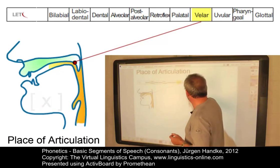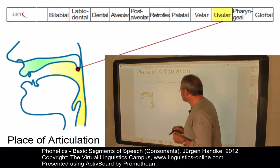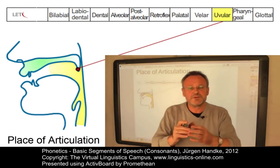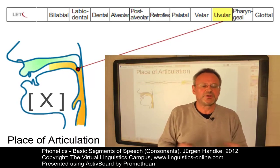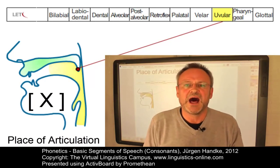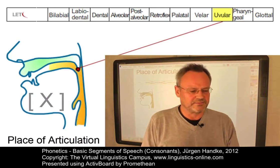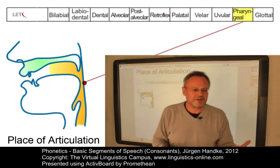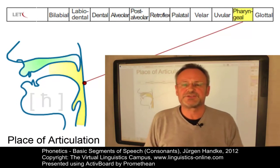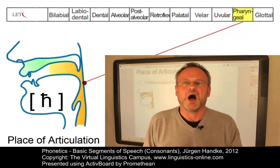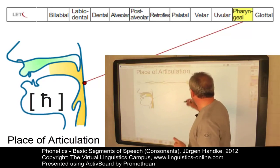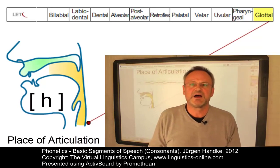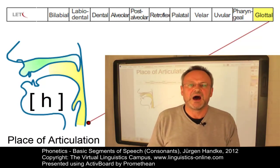Moving further back, the uvular place of articulation uses the tongue and the uvula creating a constriction, producing a sound like a-fa. Even further back, in the pharynx, we have the pharyngeal place of articulation — a-fa. Finally, if the narrowing occurs in the glottis, we get a glottal consonant like a-ha.